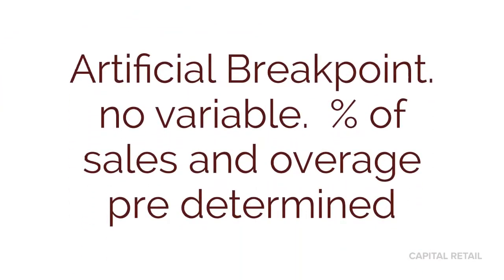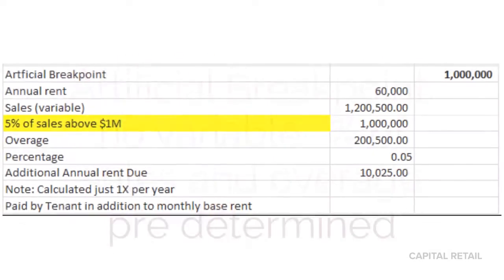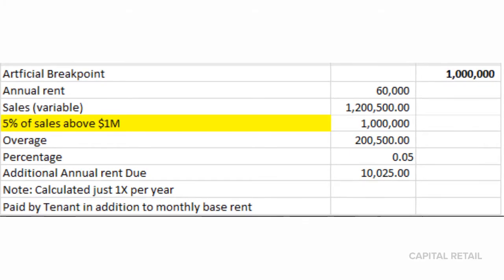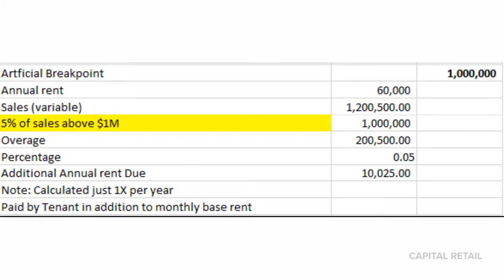With an artificial breakpoint, there's no variable. The percentage of sales and the overage are predetermined — they've already been agreed between the tenant and the landlord. For this artificial breakpoint example, 5% of sales above a million dollars is what's been predetermined and agreed upon.